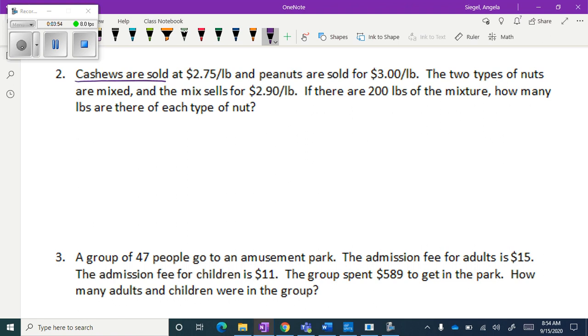We have cashews are sold for a certain price, and we have peanuts are sold for a certain price. The two types of nuts are mixed, so it's a mixture problem. And the mix sells for $2.90 a pound. If there are 200 pounds of the mixture, how many pounds of each type of nut?